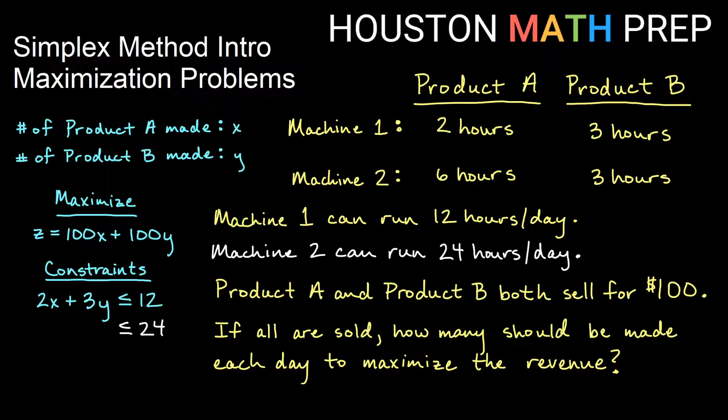And we have a similar thing that goes on with a constraint, a limitation for machine two. It can run 24 hours a day, so we're less than equal 24 in this other one. And what's less than or equal to 24 is the amount of hours that product A and B also both need on machine two. So we assume that x and y are both zero or greater because we're not going to make negative amounts of products, and then we begin to graph what's called the feasible region based on our constraints.